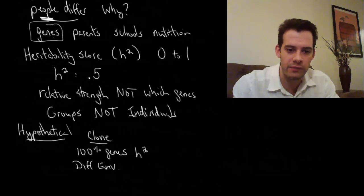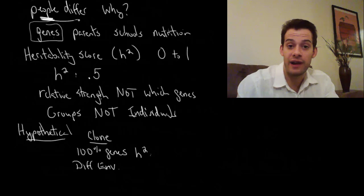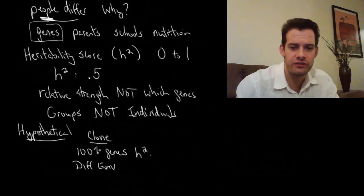Well, what's our heritability score going to be in this situation? Well in this case when we ask why do they get different IQ scores, how much do genes matter? Genes don't matter at all because everybody has the same genes. Genes aren't going to add to our explanation in any way. So in that case the heritability score is going to be zero.